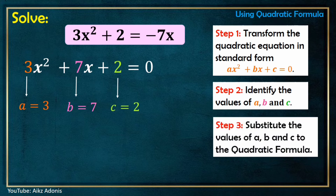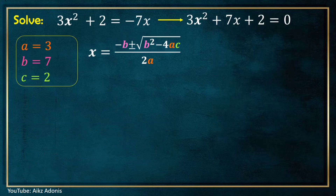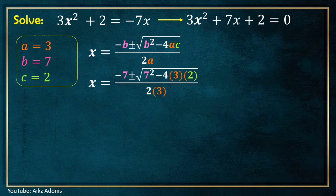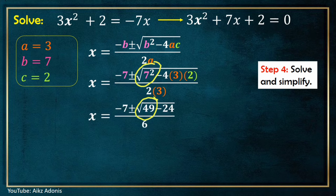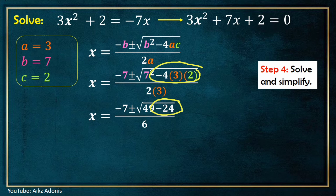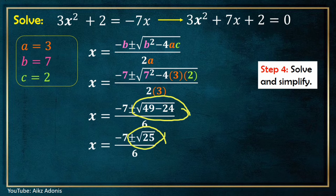Step 3: substitute the values of a, b, and c into the quadratic formula. We substitute b by 7, a by 3, and c by 2, and the rest we just copy. Step 4: solve and simplify. Let's get the square of 7 first — 7 squared is 49. Next, let's multiply negative 4, 3, and 2 — the product is negative 24. The denominator 6 is found by multiplying 2 and 3. Now let's simplify the numbers inside the square root: 49 minus 24 is 25, so we have the square root of 25.